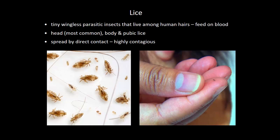Lice don't fly or jump, but with direct contact — two kids playing with heads together, or sharing costumes, hats, brushes, or combs — they will readily transfer to a new host. The life cycle: the female feeds on blood, mates, and in one or two days lays eggs. In 10 days the eggs hatch, and in another 10 days those lice are ready to mate again.